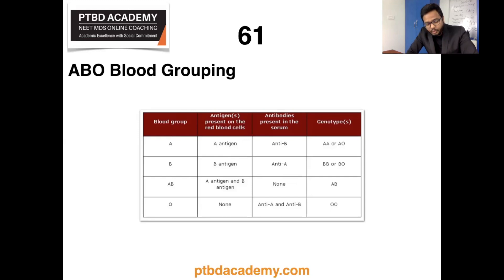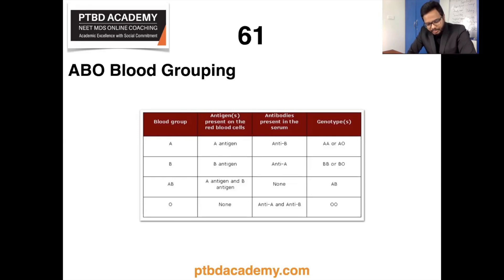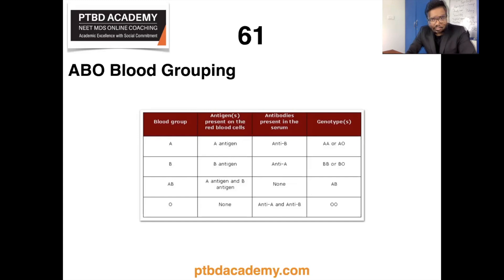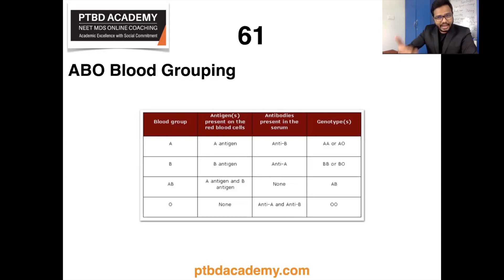In the HH blood group — also known as the Bombay blood group — because H antigen is a precursor of ABO blood group antigens, if it is not produced, ABO blood group antigens are also not produced. H antigen is virtually found on all erythrocytes as it is a building block and precursor for formation of various antigens in the ABO blood grouping system.